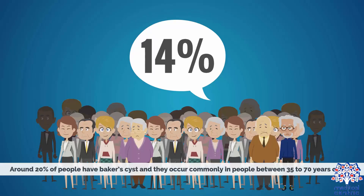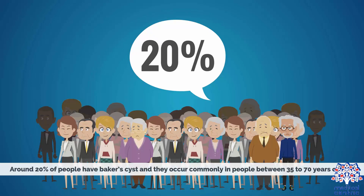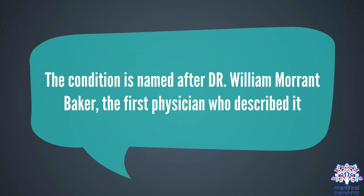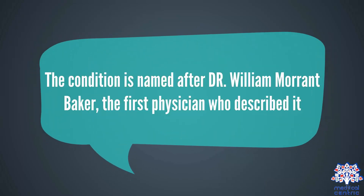Around 20% of people have Baker's Cyst, and they occur commonly in people between 35 to 70 years of age. The condition is named after Dr. William Morant Baker, the first physician who described it.